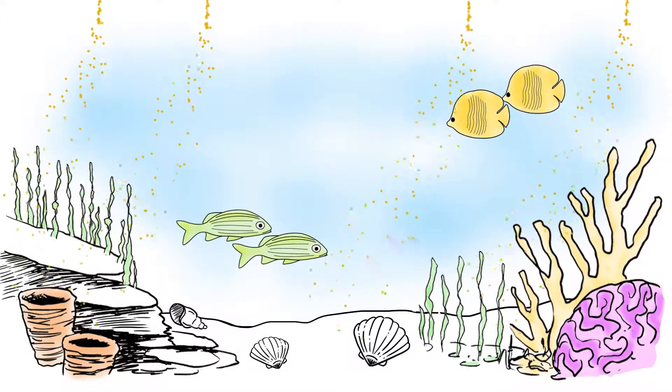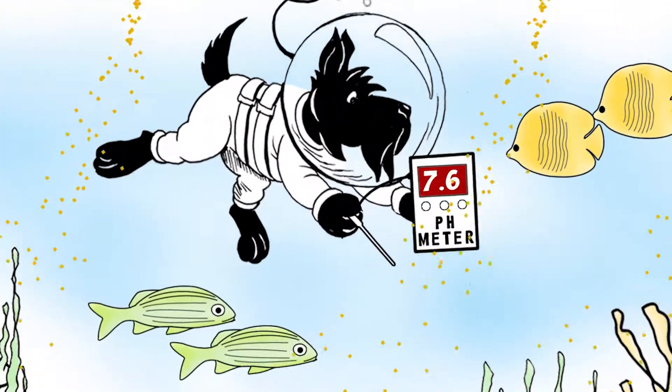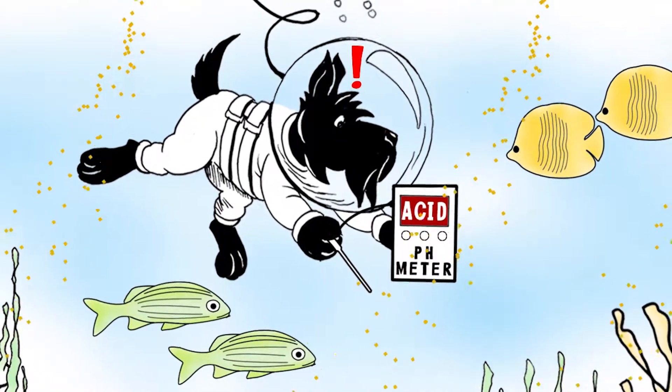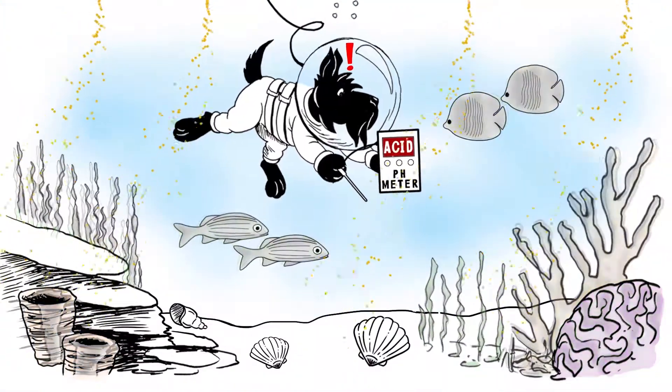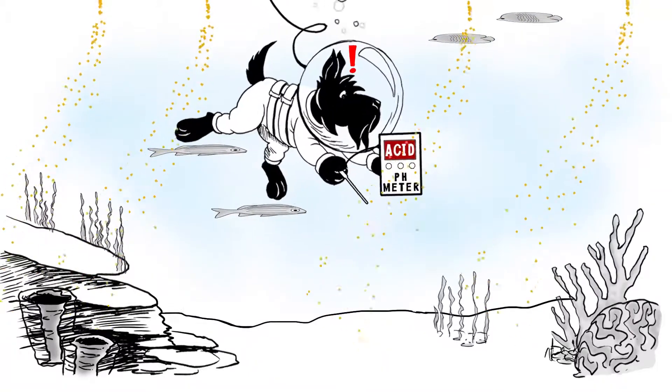When carbon dioxide goes into the atmosphere, it leads to climate change. When it goes into the ocean, it makes carbonic acid, which makes the ocean more acidic. That harms coral reefs and ocean life. So, the ocean is not a good place for carbon dioxide, either.